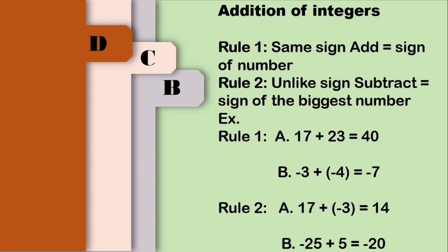For letter B: negative 25 plus 5. Since the two integers have different signs, we need to subtract the two numbers, then copy the sign of the biggest number. The biggest number is 25, at ang sign niya ay negative. Kaya yun yung susundin natin. Ang answer natin dito ay negative 20.